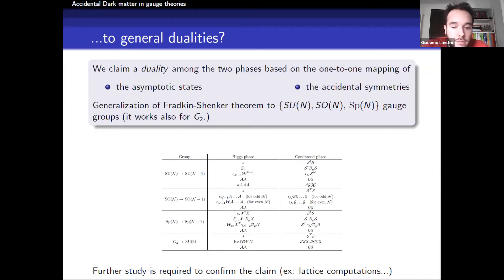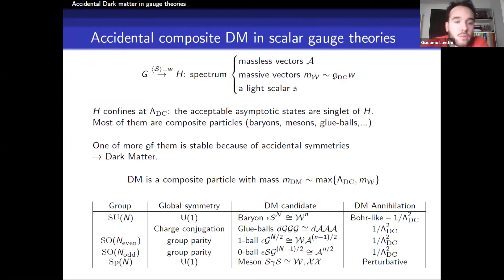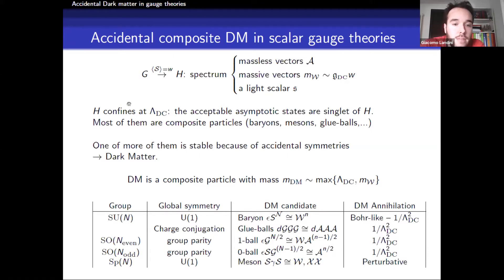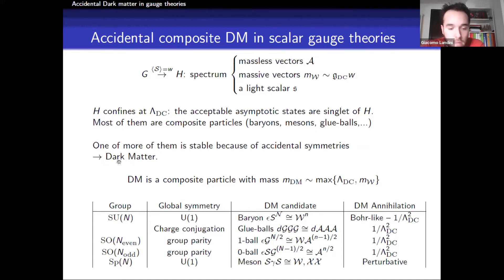Using the duality, we work in the Higgs phase, which is easier. The gauge group gets spontaneously broken, giving a light scalar particle playing the role of the dark Higgs, plus a set of massive vectors acquiring mass through symmetry breaking. After gauge confinement, particles combine into singlets of the unbroken gauge group, so most of them are composite particles made of these massive vectors. One or more of these states will be stable because of the accidental symmetries of the Lagrangian and can be identified as dark matter. All in all, dark matter is an accidentally stable composite particle with mass given either by the confinement scale or by the scale of spontaneous symmetry breaking.